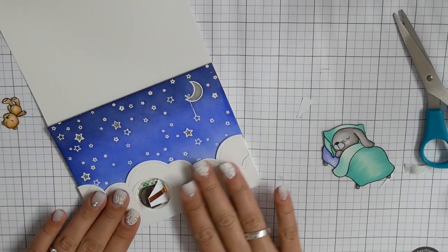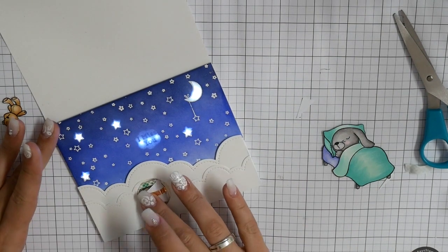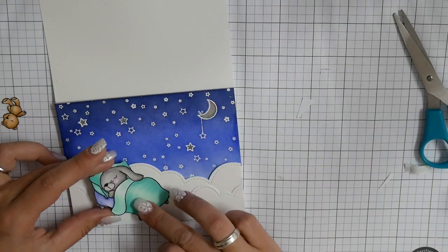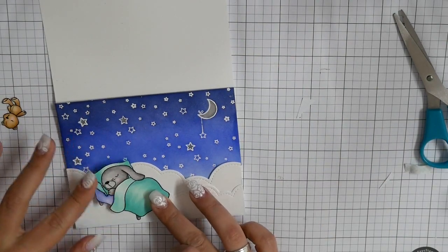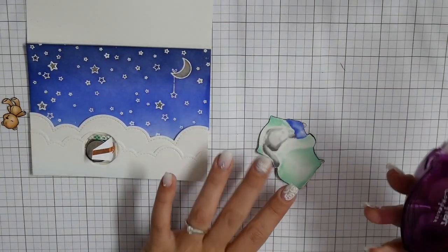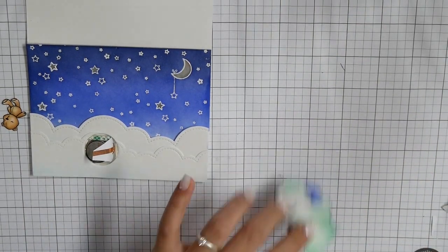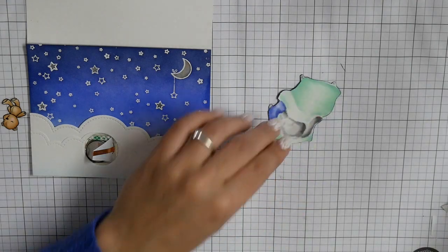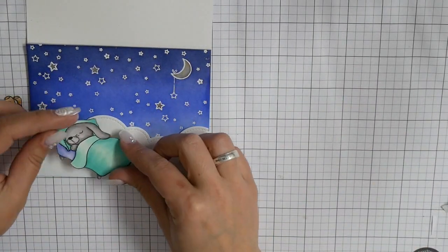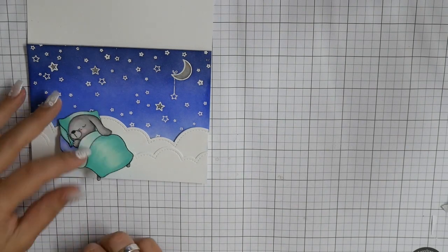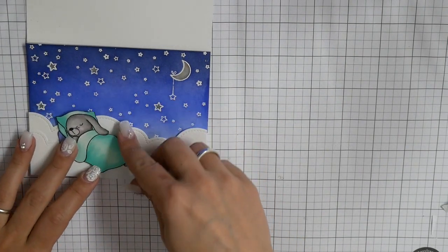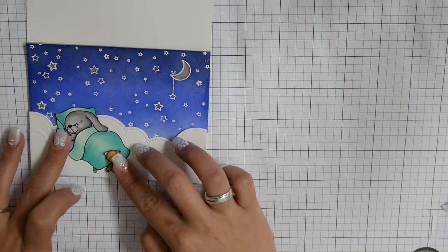And here I did the same procedure. I used the liquid glue to tape the clouds down. Now I can start to tape my bunny down, and I put down my glue glider. Then I remembered that I want to use the 'press' sentiment on top of the battery, so the recipient knows where to press.